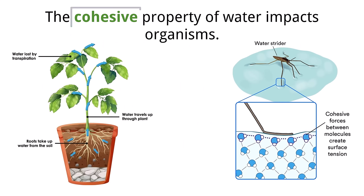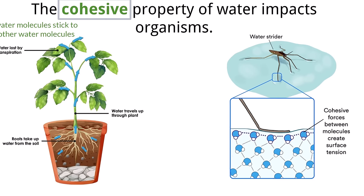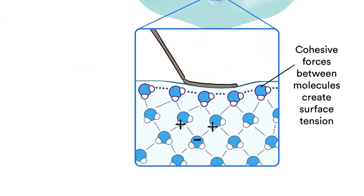Cohesion, which describes the ability of water molecules to attract and stick to other water molecules, is the first important property. As we can see in this image, this is mainly due to the polarity of each water molecule and the formation of hydrogen bonds. These negative and positive charges keep the water molecules together, making them more difficult to pull apart compared to molecules of other liquids.